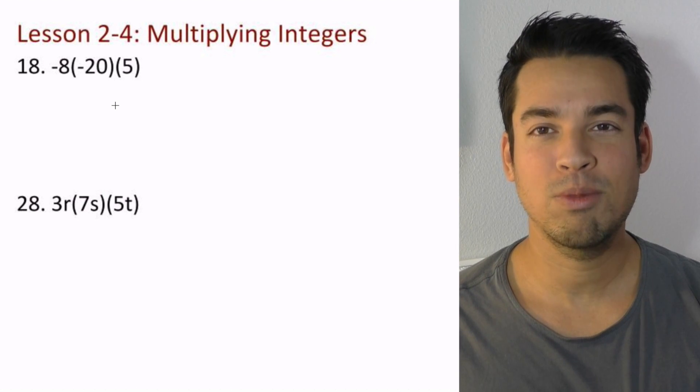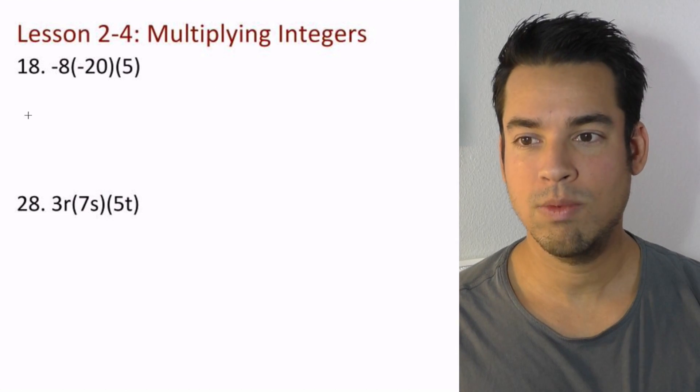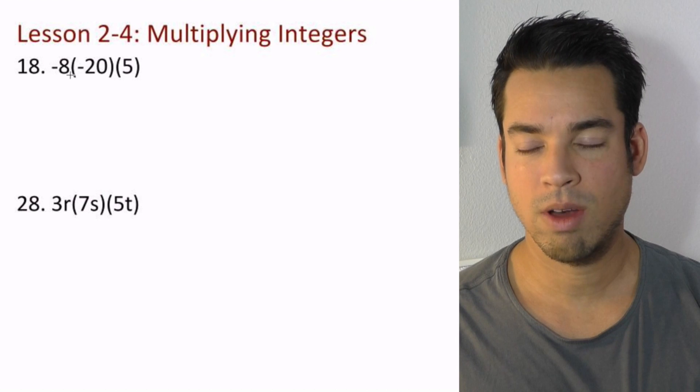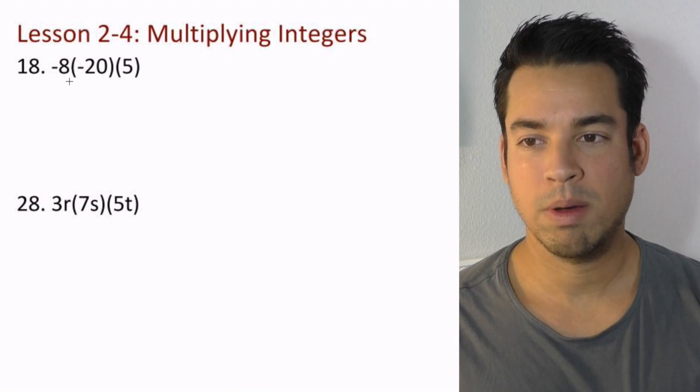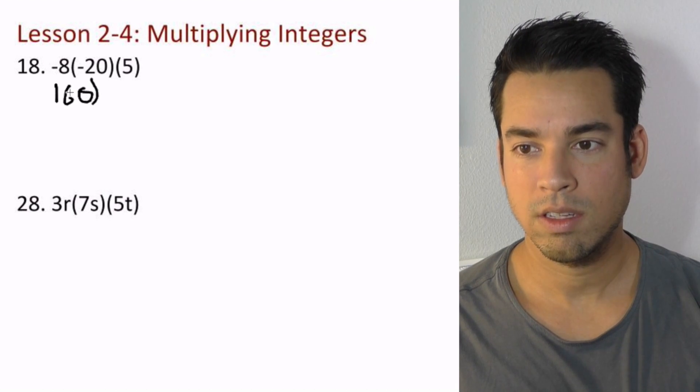Here we have an even number: negative 8 and negative 20. They cancel each other out, so this whole thing is positive. Then we just do the multiplication: 8 times 20 is 160, and then we multiply that by 5.